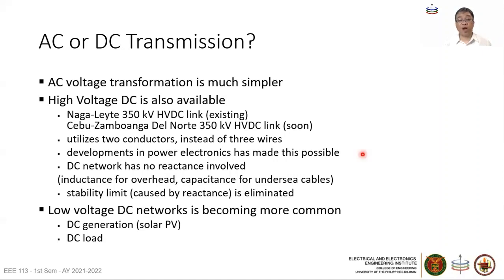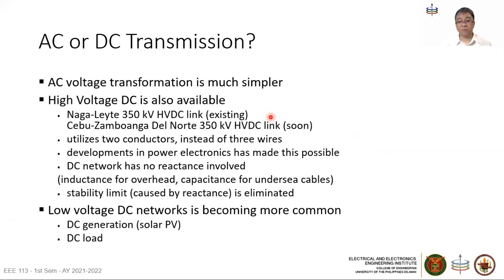However, with further development in power electronics, DC transmission has found key applications, especially in high-power applications — a few hundreds to a few thousands of megawatts across long distances. In the Philippines, the link connecting Luzon to Visayas is an HVDC link at 350 kilovolts for 440 megawatts between Naga-Siti and Ormoc, Leyte. Likewise, being built now is the Visayas to Mindanao HVDC link at 350 kilovolts for 450 megawatts between Cebu Island and Zamboanga del Norte.